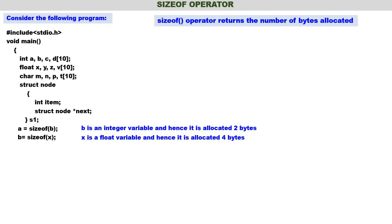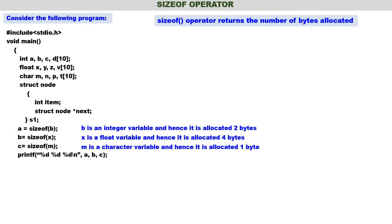Next c is equal to sizeof(m). m is a character variable. For a character variable you require only one byte. So m is allocated one byte. sizeof(m) is 1, so 1 is stored in c. Now printf a, b, c — what will be printed? For a: 2 bytes, for b: 4 bytes, and for c: 1 byte. a is 2, b is 4, and c is 1. They store the size of integer variable b, float variable x, and character variable m respectively.